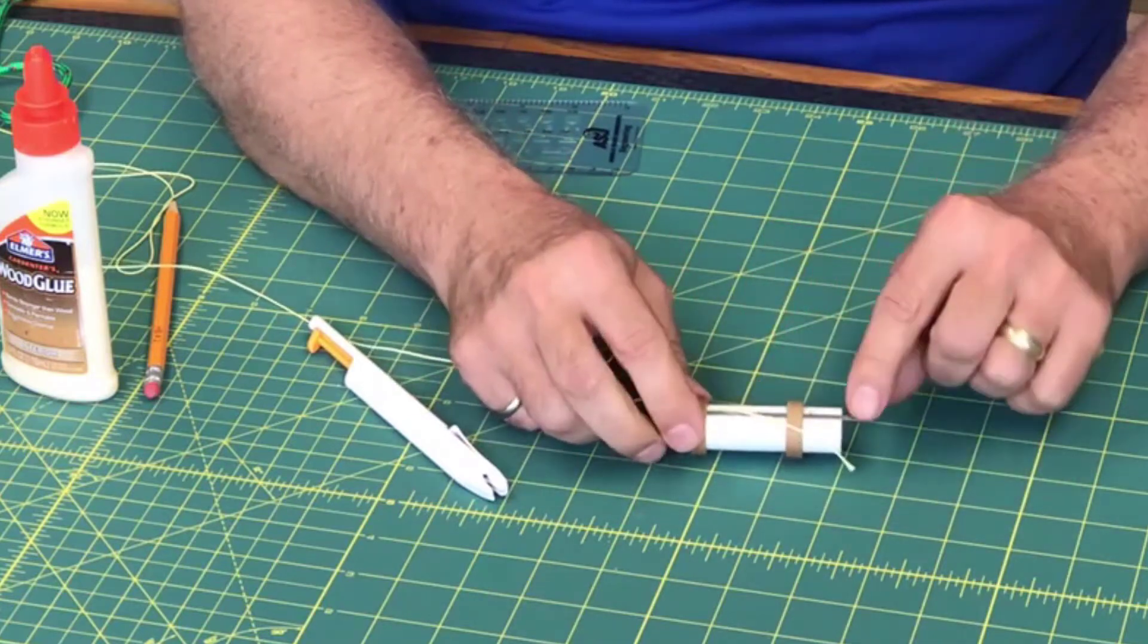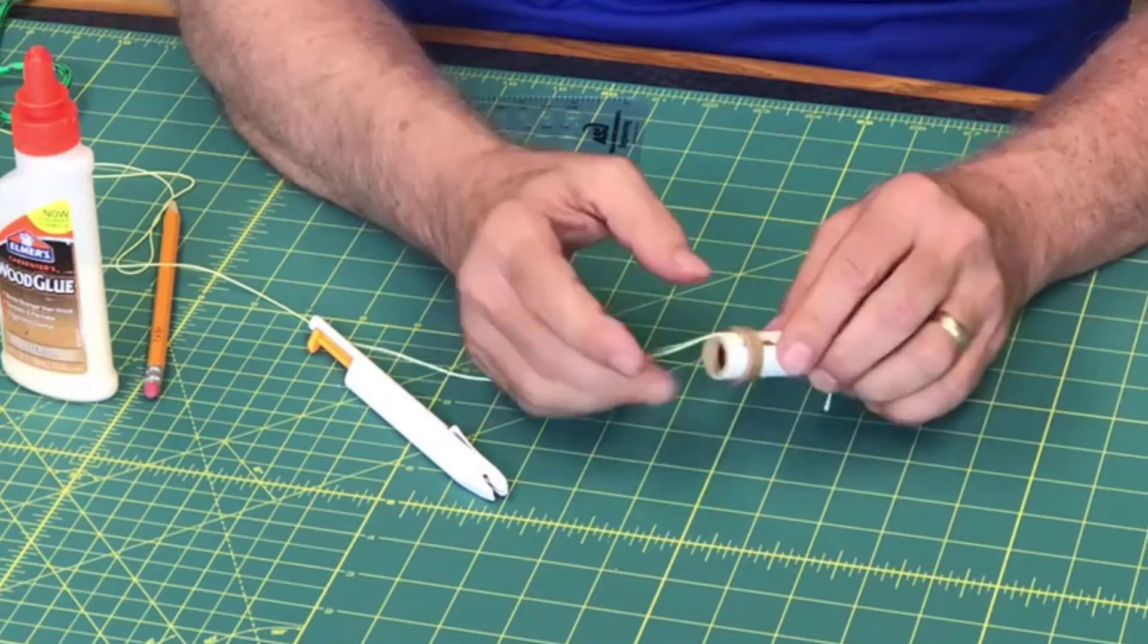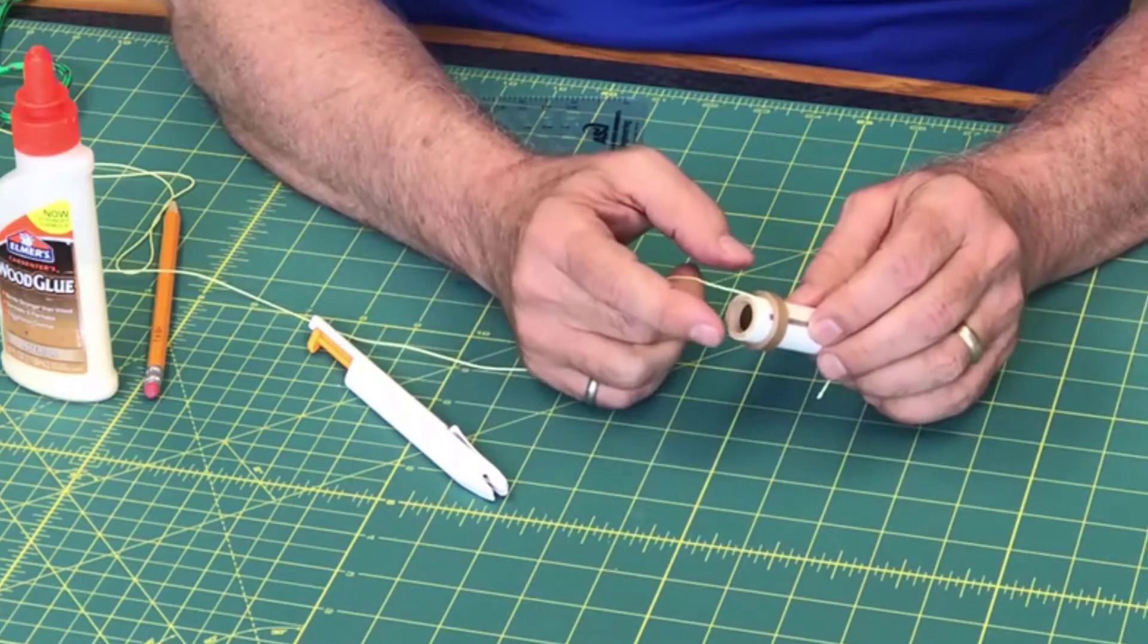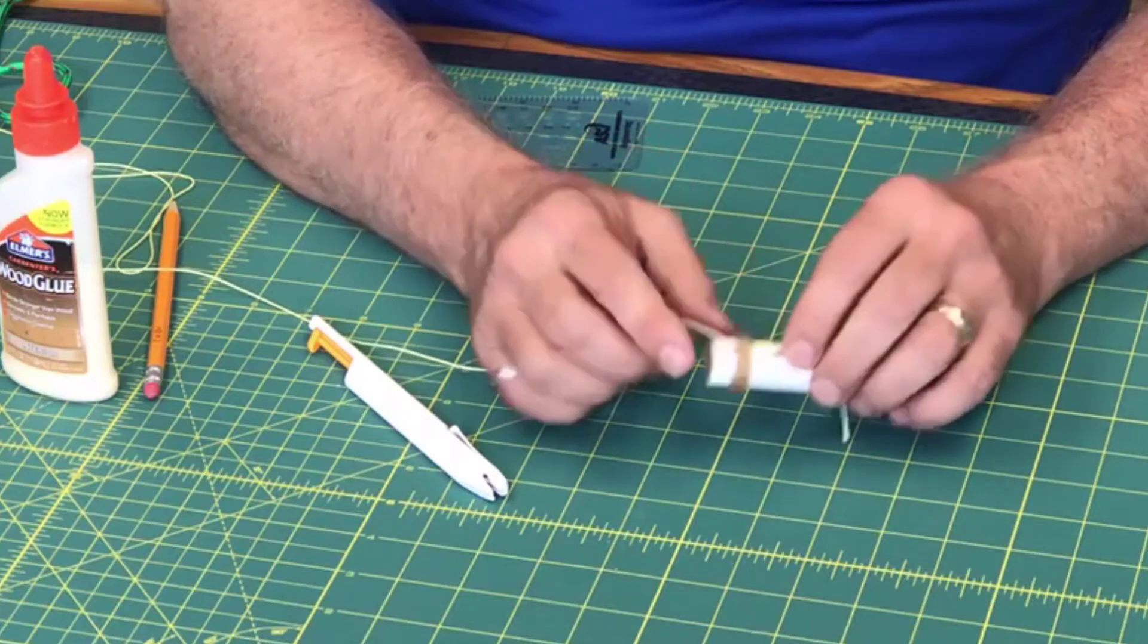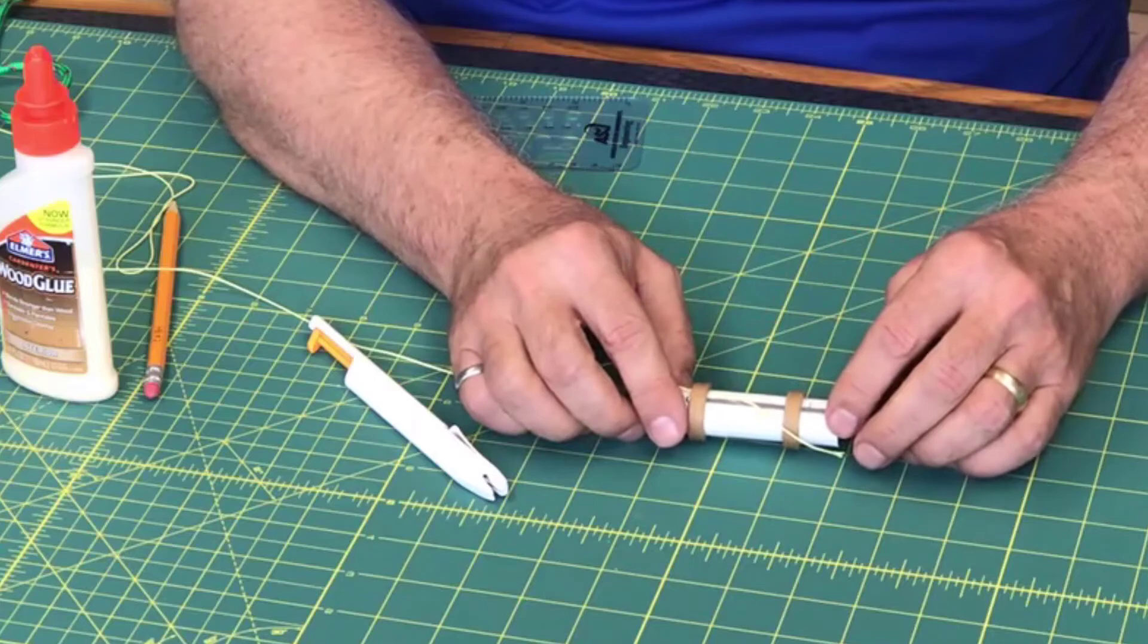So make sure you've got your motor clip, your two centering rings on the outside, your shock cord underneath that one, and then your other centering ring—that's your engine block—here at that end. Put all those together without using any glue. All right, so go do that now.